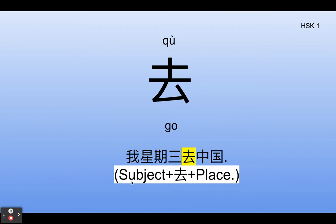So, in Chinese sentences, the structure is: subject + 去 + place. For example, 我星期三去中国 — I will go to China on Wednesday. 星期三 means Wednesday. 去.